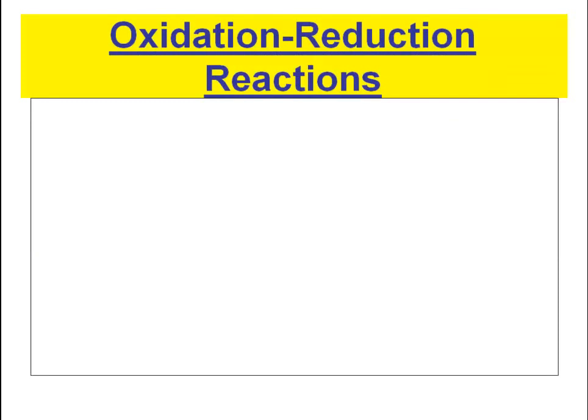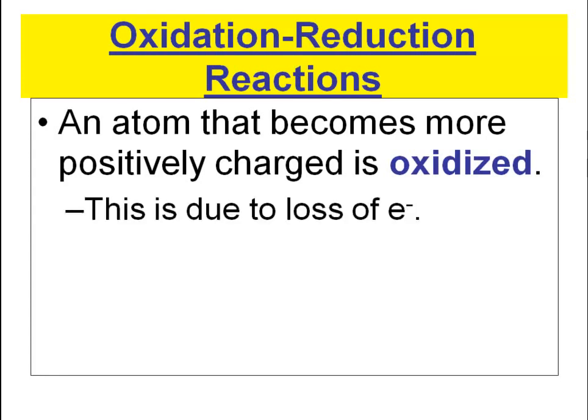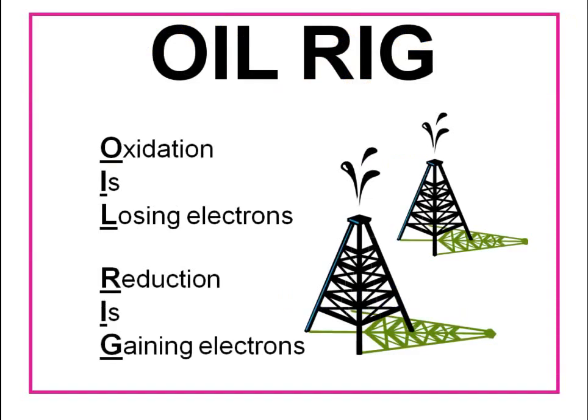Oxidation and reduction reactions, often called redox reactions — an atom that becomes more positively charged is oxidized. This is due to the loss of electrons. The gain of electrons by an atom is called reduction, so it's important to know the difference between oxidation and reduction.